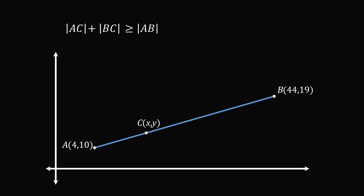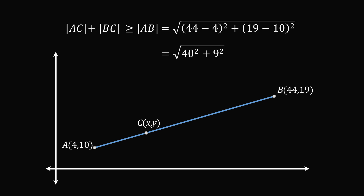The length of AB equals the square root of the quantity 44 minus 4 squared plus the quantity 19 minus 10 squared. This simplifies to the square root of 40 squared plus 9 squared, which is equal to 41.